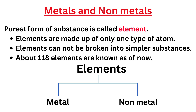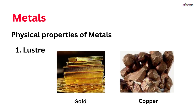So ishi tarah ke 118 elements are known till now. These elements are classified into two types on the basis of their properties: first, metals, and second, non-metals. So let's start with metals.